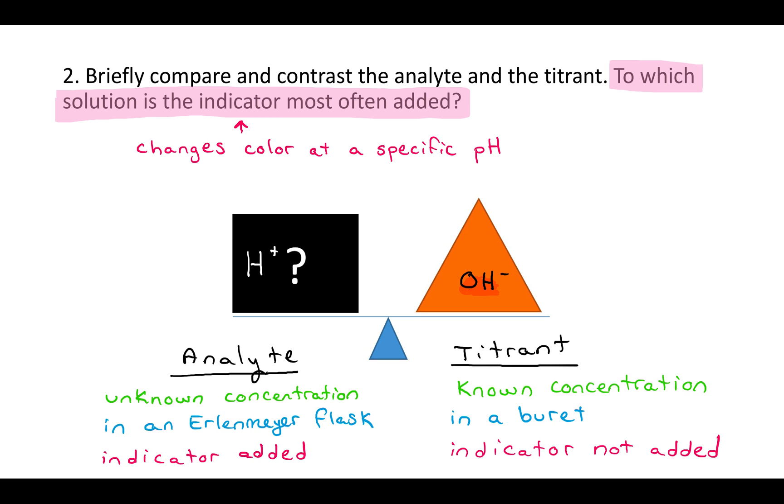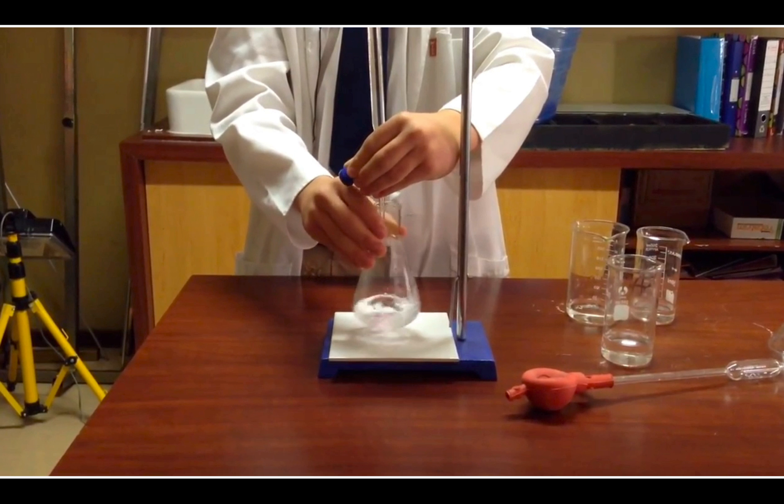That's another difference that we can use to compare the analyte and the titrant. The indicator is often added to the analyte, because we want to know when the analyte is about neutral. The titrant wouldn't have indicator added to it, usually.